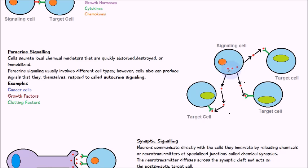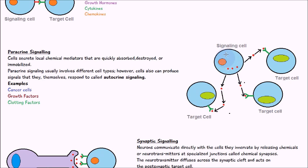In paracrine signaling, the signaling molecule is either absorbed, destroyed, or immobilized, but it binds onto the target cell and travels only in a local area — not very far. It usually involves different types of cells. There is also a related type called autocrine signaling, where the signaling cell releases a signal molecule that binds onto a receptor on its own cell, stimulating itself. Examples of paracrine signaling include cancer cell growth, growth factors, and clotting factors.